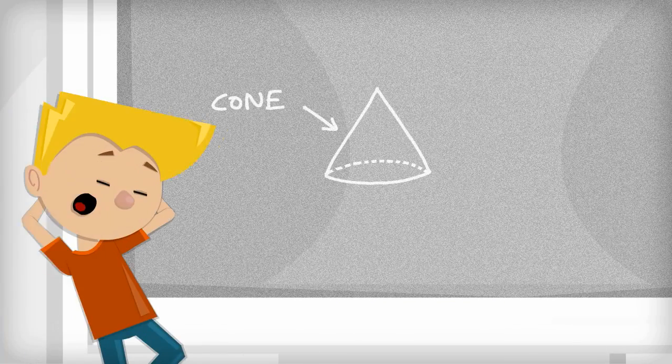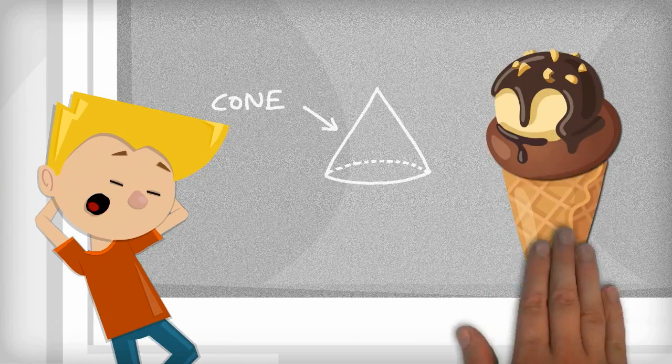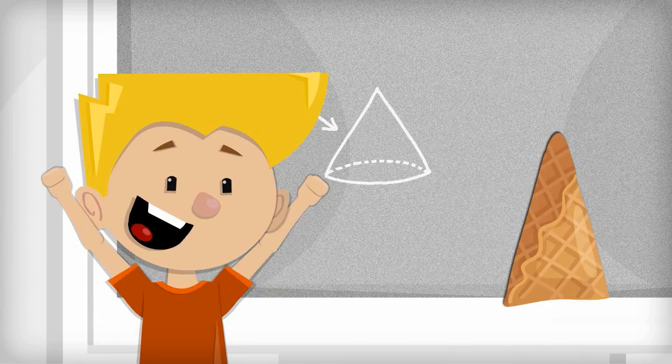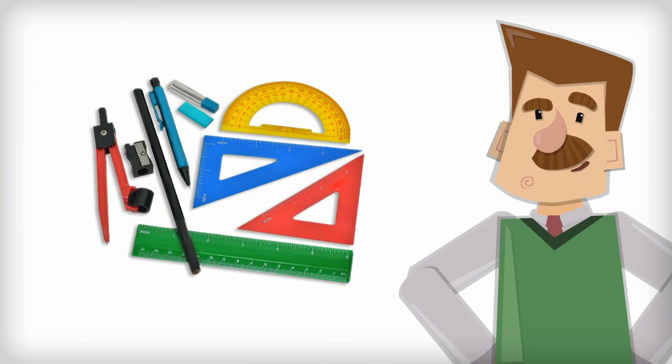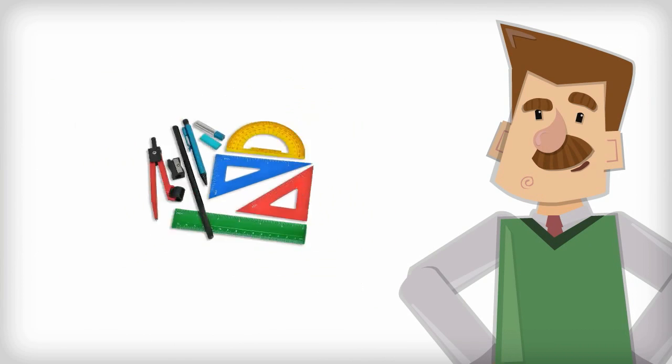For instance, the kid can relate to a cone better if he's given an ice cream cone rather than just drawing it on the board. Shapes are easy. And yes, the geometry kits do help. But what about other concepts of the subject?